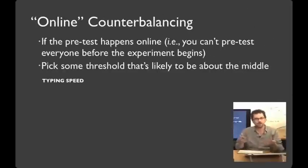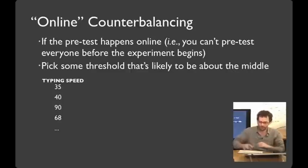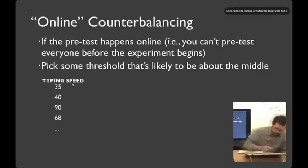But say people are coming in online, so you can't pre-test people before the experiment. Well, what you can do is you can pick some threshold that you think is in about the middle. So, for typing, you might say 65 words a minute. And as people come in, you can check whether they're above or below that threshold and label them as high or low, fast or slow typers based on that.